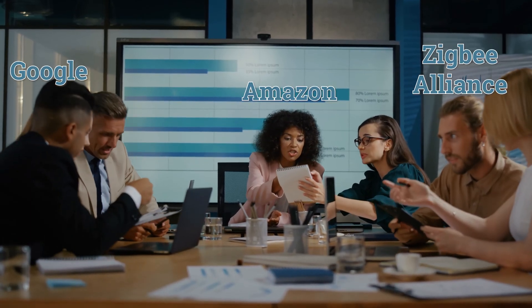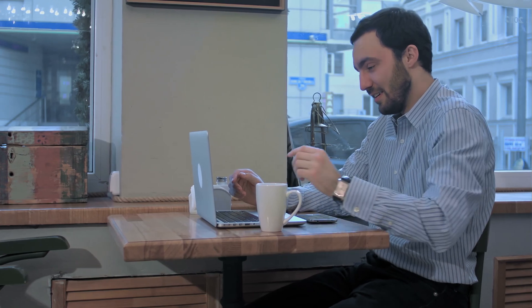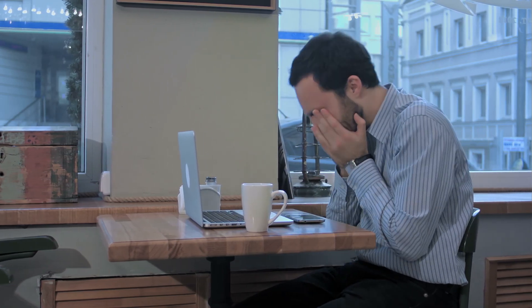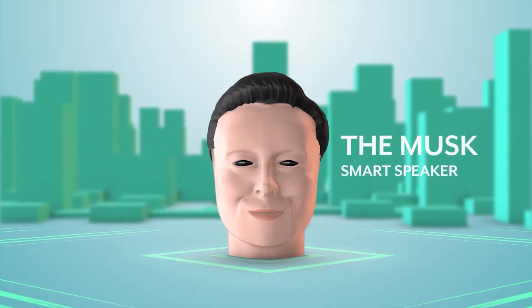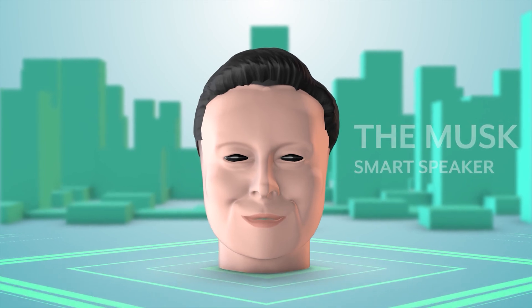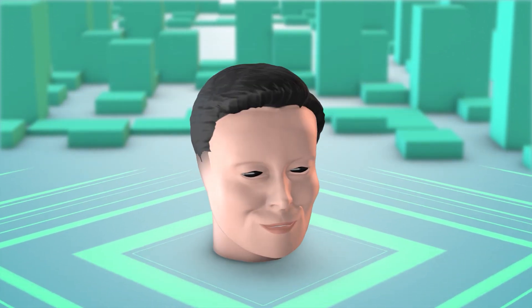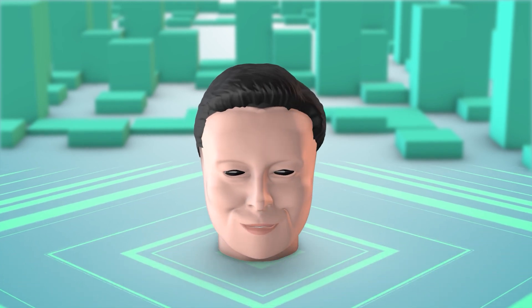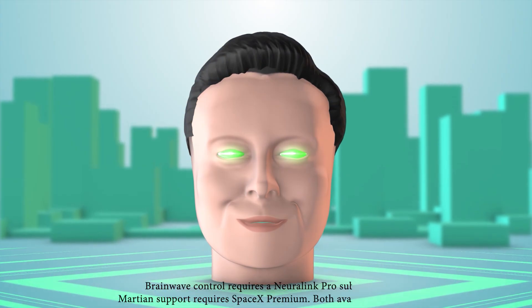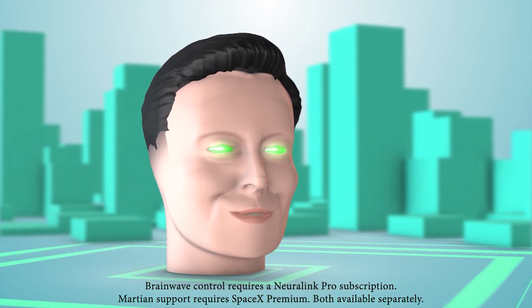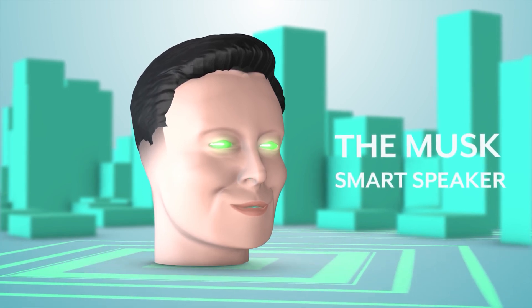A connectivity standard is just a fancy way of saying that loads of big companies get together, talk a lot, and then write up a technical document spanning hundreds of pages. Software developers then have to ensure their products follow this standard. At the end of this exercise, if Elon Musk introduces a Matter-compatible smart speaker, it can suddenly control your Philips Hue system and your lights. The Musk smart speaker — control your Tesla, smart home, and love life using your brainwaves, or maybe just your voice. Supports Thread, Matter, and the Martian atmosphere. Brainwave control requires Neuralink Pro subscription. Martian support requires SpaceX Premium, both available separately. The Musk smart speaker, here to take over the world.